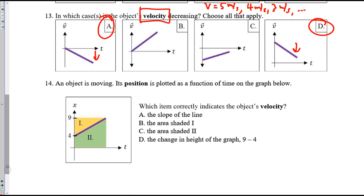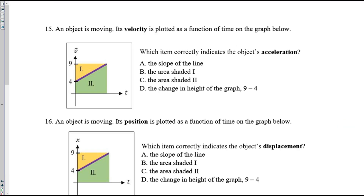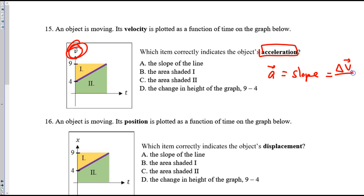Number fourteen — velocity on a position graph is slope. That's a good thing to remember. Slope is always change in Y axis, which is position, divided by change in X axis, which is time — that is velocity. For a velocity graph, we find acceleration again using slope, because slope is change in Y axis — velocity — divided by change in X axis. And delta V over delta T is acceleration.